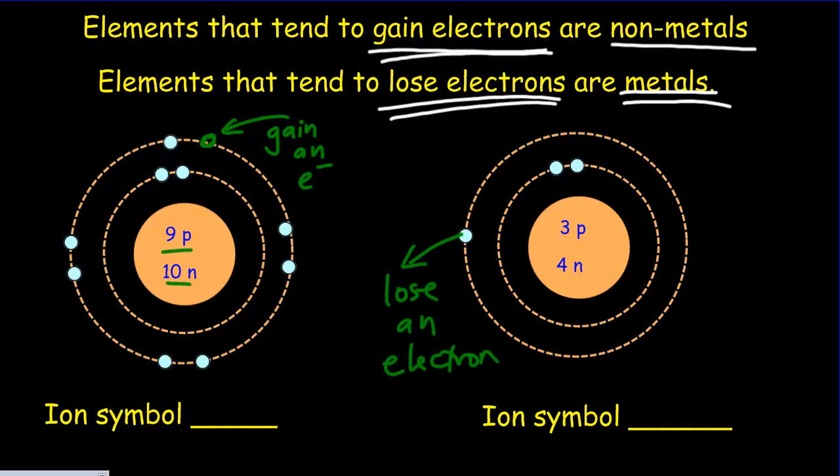We've looked at this element before. It's fluorine. If it gains an extra negative charge, it will have a charge of minus 1, a charge of one excess electron.